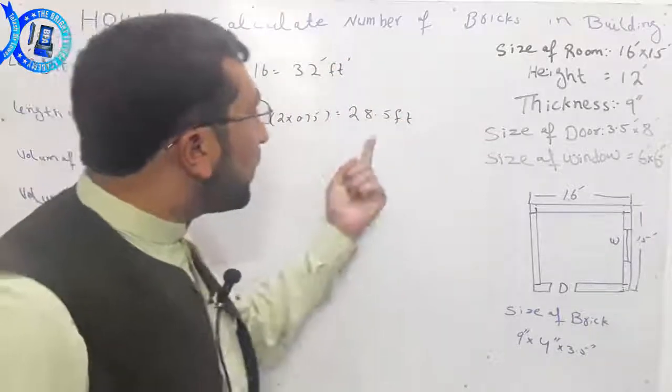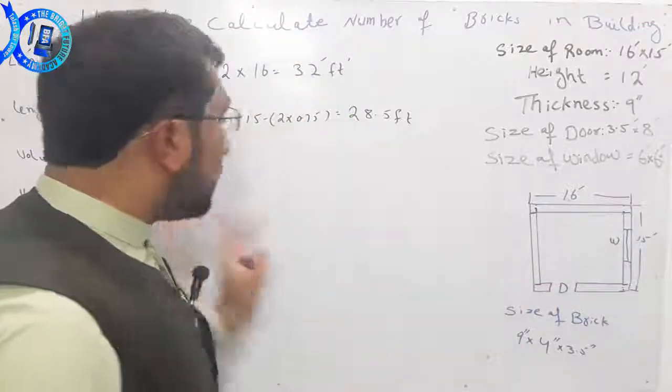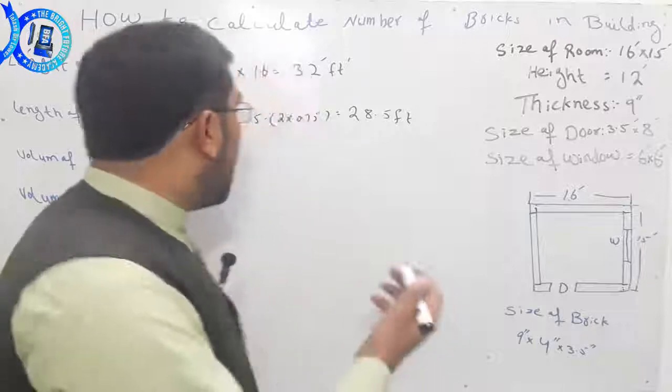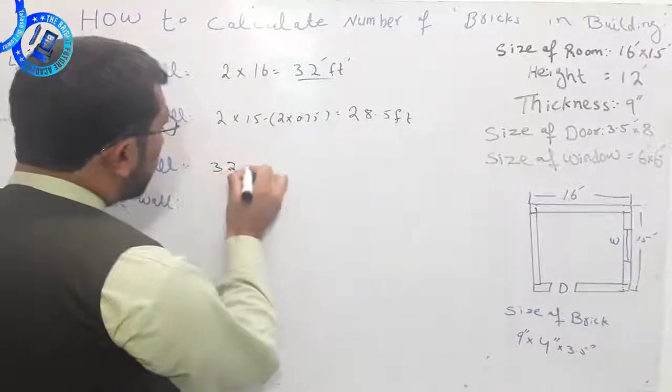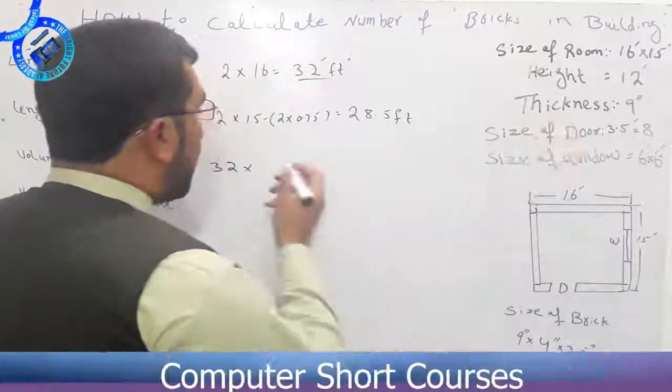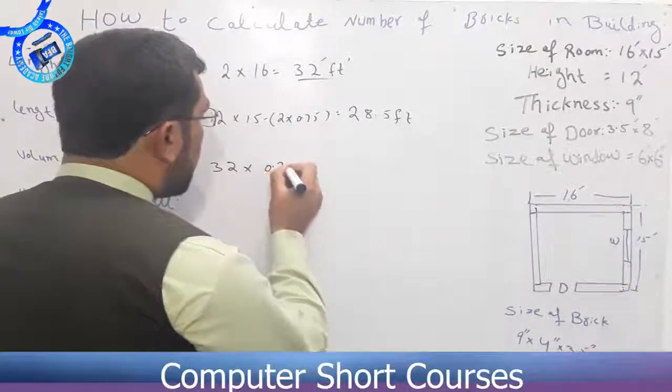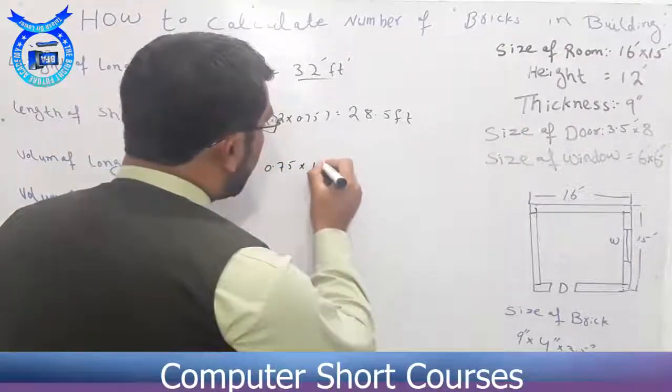The long wall and short wall volume. Long wall volume is length of length, 32 feet length, breadth, and height of 12 feet.